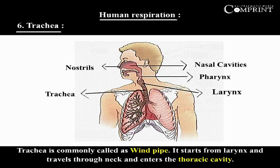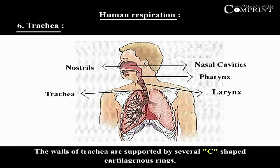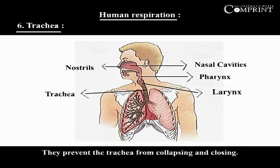Trachea: The trachea is commonly called the windpipe. It starts from the larynx, travels through the neck, and enters the thoracic cavity. The walls of the trachea are supported by several C-shaped cartilaginous rings, which prevent the trachea from collapsing and closing.